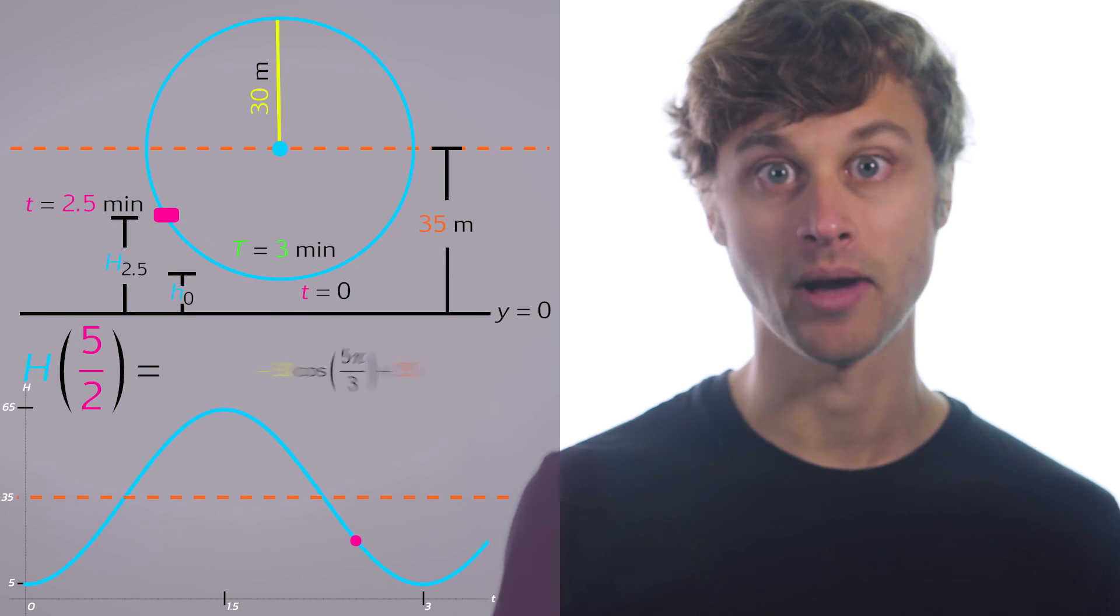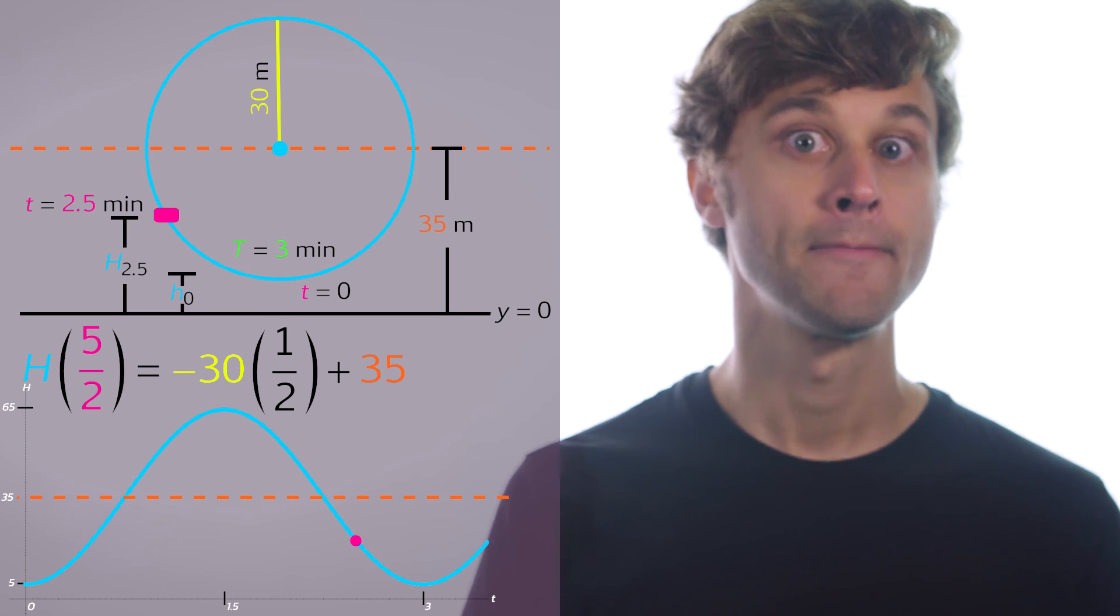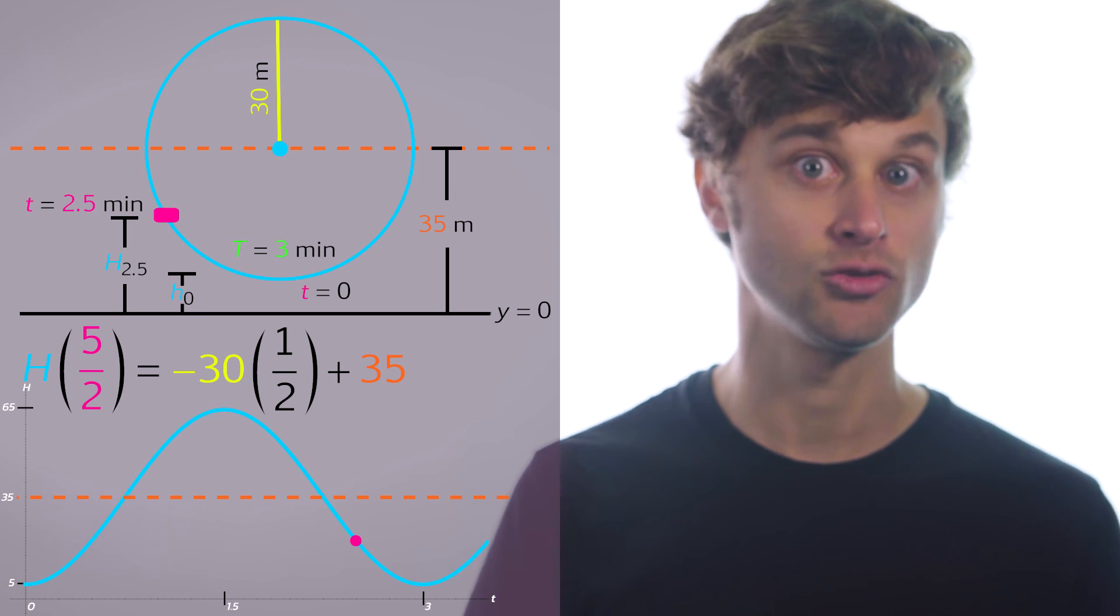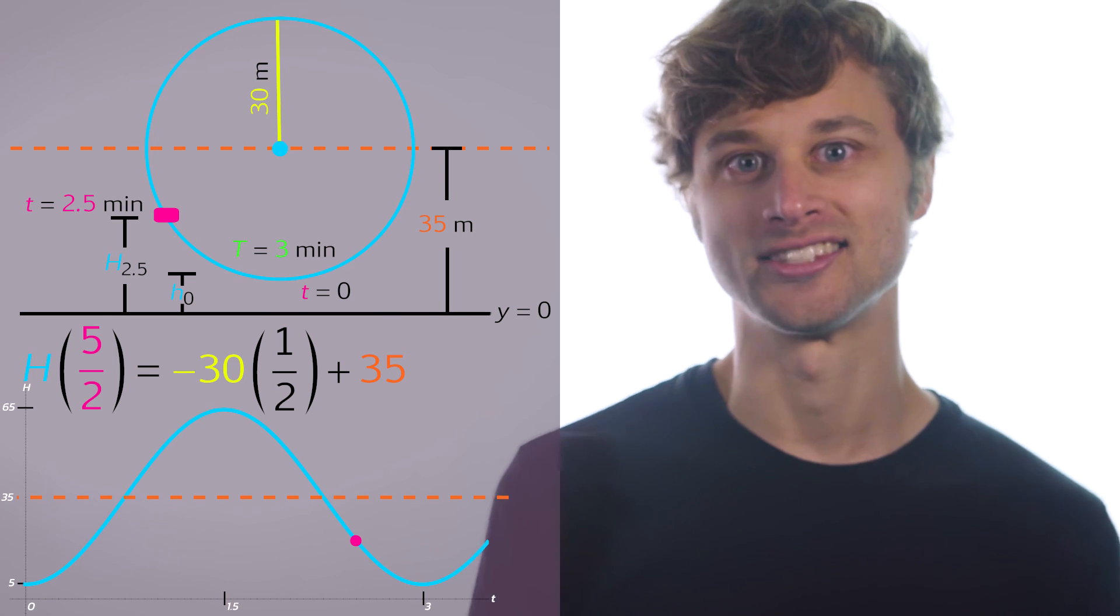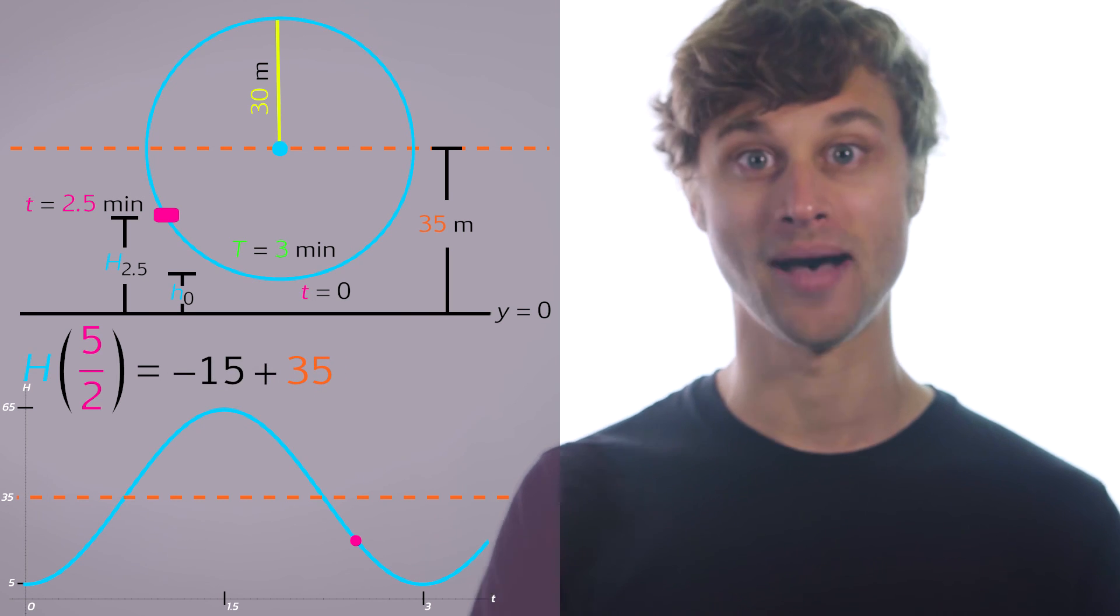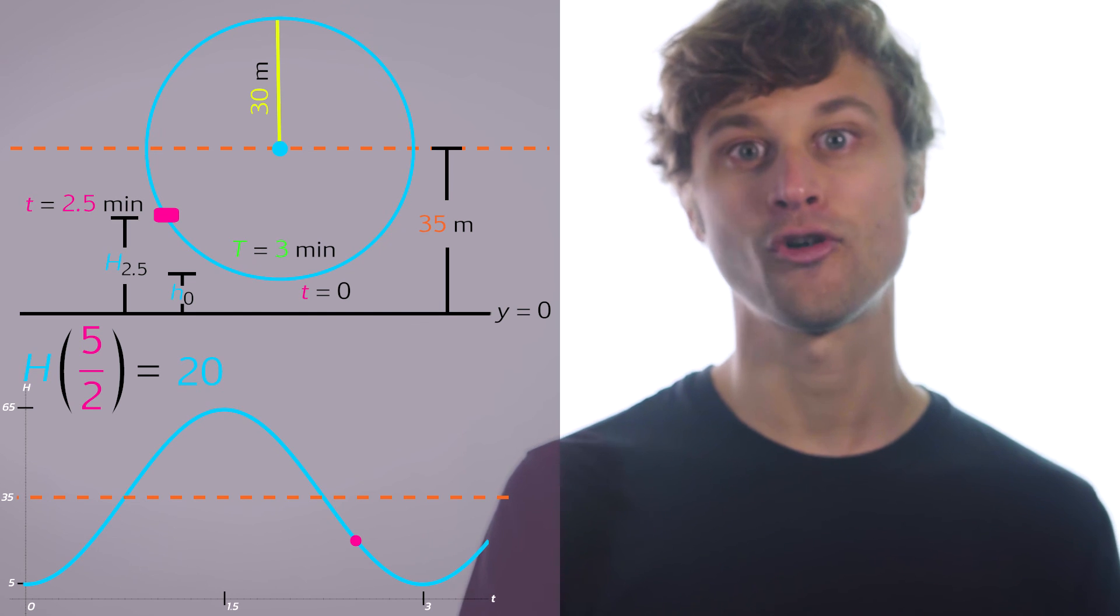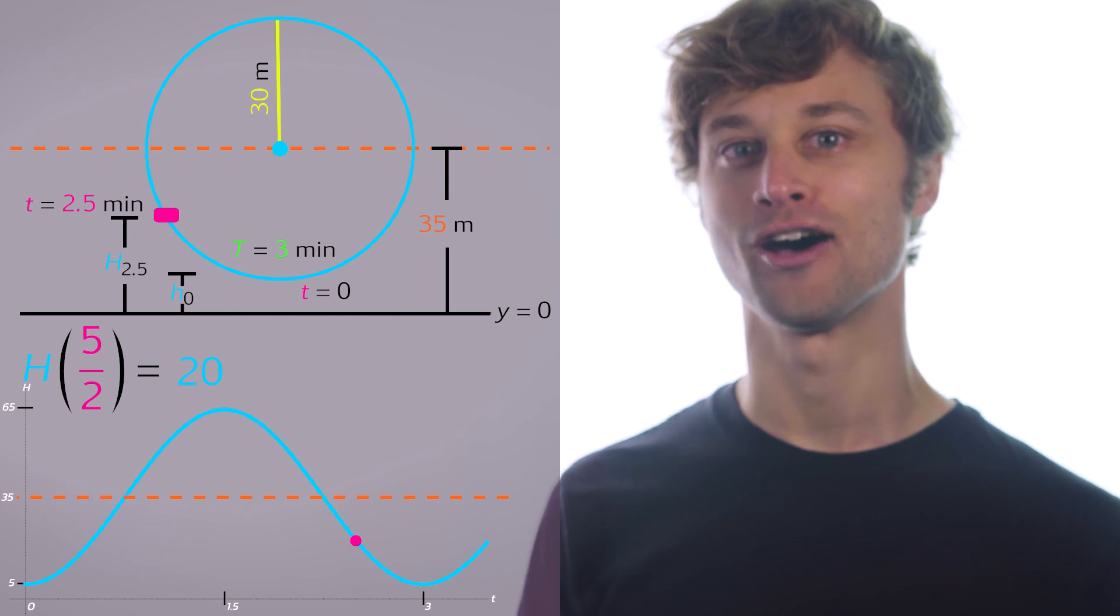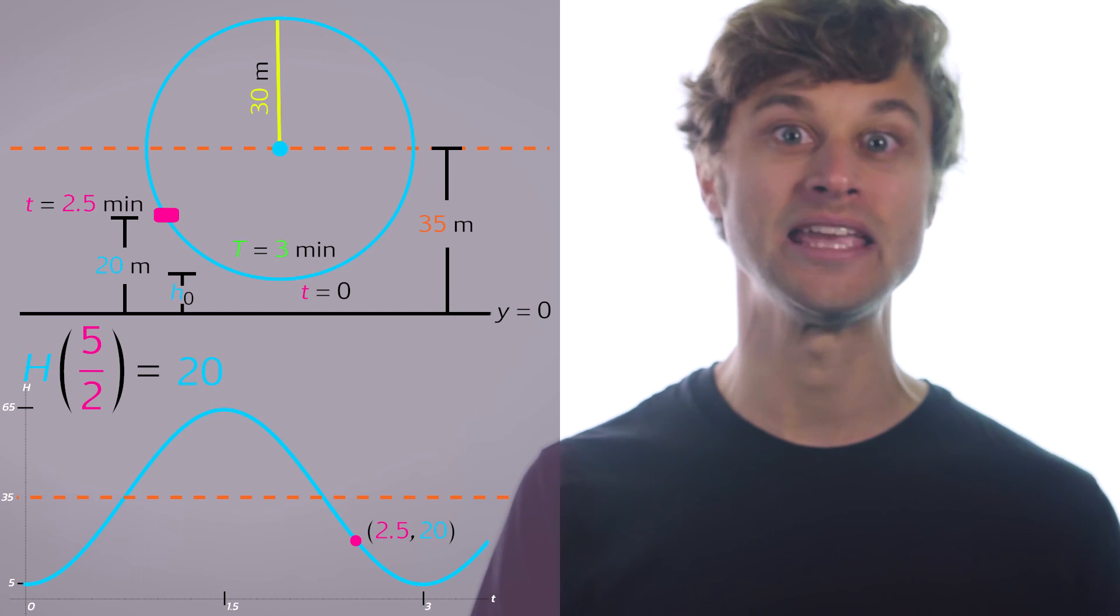So now I can replace positive 1 half in for the cosine of 5π over 3, and I get this: negative 30 times 1 half plus 35 is equal to H of 5 over 2. Okay, so now we just need to reduce this down. 1 half of negative 30 is negative 15, and 35 minus 15 is equal to 20. So therefore, after 2.5 minutes of traveling on the Ferris wheel, after having gotten on at the bottom of the Ferris wheel, the passenger will be at a height of 20 meters.